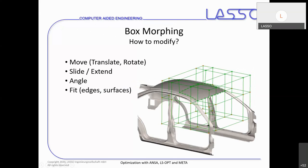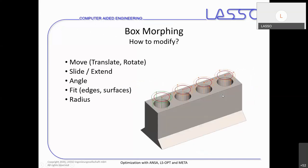Fitting to edge and surface was already mentioned. For cylindrical boxes, we can modify the radius. You can also have nested cylindrical boxes with consecutive radii, so more than one radius can be changed with a cylindrical morphing box. Here the inner radius of a nested morphing box is changed.